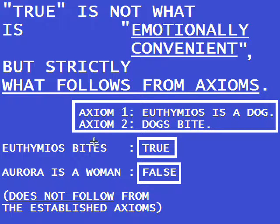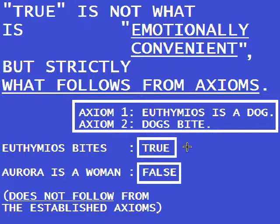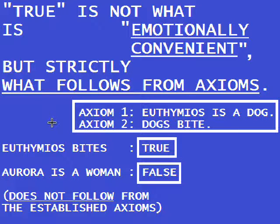Understand that TRUE is not what is emotionally convenient, but strictly what follows from axioms. Let's look briefly at an example. Let's have two axioms in our logical system: Euthymios is a dog, and dogs bite. From this you can conclude that Euthymios bites — that is true. What you cannot conclude is that Aurora is a woman. Aurora may very well be a woman, but it cannot be concluded from these axioms. Hence, in our reasoning system, that is false. If you look at a higher reasoning system, then it might be correct.